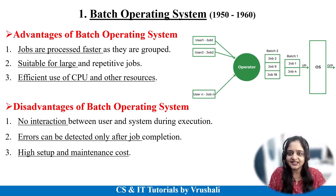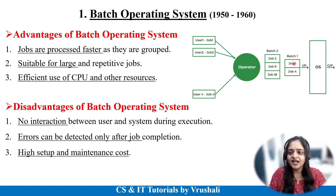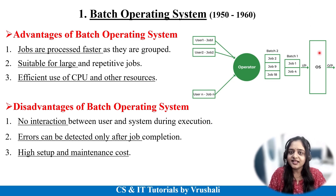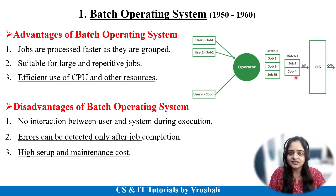Now what are the advantages and disadvantages? One main advantage is that they make a group of similar types of instructions, making it suitable for large and repetitive jobs. They also provide efficient CPU processing power and use of other resources. The main disadvantage is that users are not directly interacting with the operating system. Also, errors are only detected after the jobs have been executed. Additionally, it requires very high setup and maintenance cost. This is batch operating system.